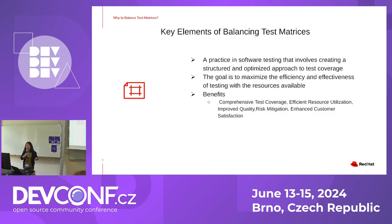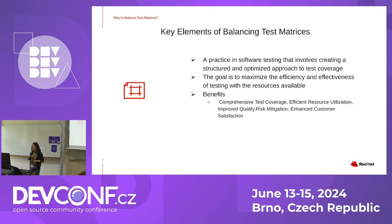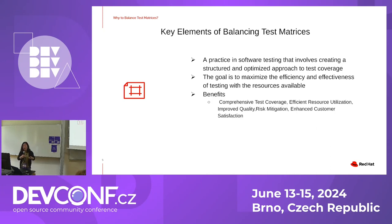So how should we handle such a challenge? My answer is balancing test matrices. It is a practice in software testing that involves creating a structured and optimized approach to test coverage. The goal is to maximize the efficiency and effectiveness of testing with the resources available. Benefits include comprehensive test coverage, efficient resource utilization, improved quality, risk mitigation, and enhanced customer satisfaction.